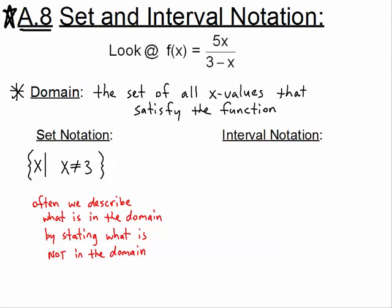If we wanted to talk about interval notation, interval notation gives all the intervals of real numbers that x can be. Since we're only restricting 3 from our interval, if we had the entire number line, all we're doing is taking the 3 out. The very first concept on our number line is negative infinity — and negative infinity is not a number, it's a concept. So we're going from negative infinity all the way up to the value of 3. Since 3 cannot be in the domain, I'm putting a parenthesis there — a parenthesis means it's not included.